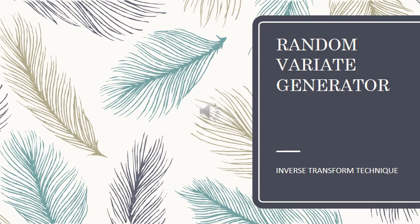Most simulation modelers will be using the inbuilt function for random numbers or routines. But some modelers may not have access to random numbers. At that time we require random variates to be generated. The best method for random variate generation is the inverse transform technique, which will be explained in the next slides.